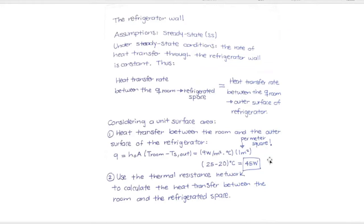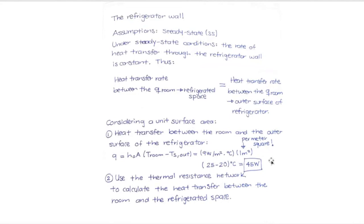I have the heat transfer rate. I can now consider it constant through the entire wall, apply the electrical analogy, and get the missing thickness. The strategy is: focus on a piece of the entire wall to get the heat transfer rate, assume it constant, and then find any missing information — whether it's an interface temperature, a thickness, a K value, or an H value. You already have the heat transfer rate from analyzing just a piece of the problem. That's a very common strategy when dealing with electrical analogy.